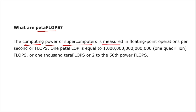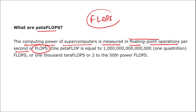Now, let's talk about petaflops. The computing power of a supercomputer is measured in flops — that is, Floating Point Operations Per Second. If a question asks how the computing power of a supercomputer is measured or in what unit, the answer is flops, which stands for Floating Point Operations Per Second.